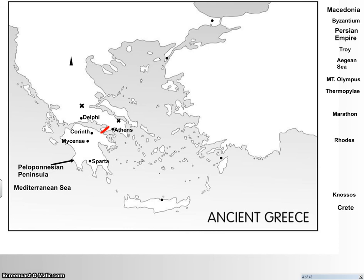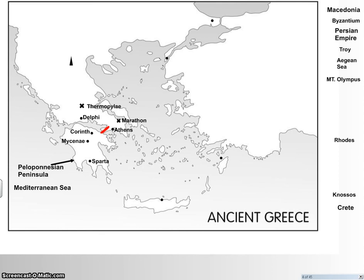A couple of major battle sites from the Persian Wars: Marathon, where the story of the marathon race comes from. A runner was supposedly sent after the great Athenian victory over the Persians at Marathon to bring the message to Athens — roughly 26 miles — and supposedly died upon arriving. That's the genesis of the idea. For those who've seen the movie 300, the next location is the battle of Thermopylae, where the 300 Spartans and their allies fought the Persians.